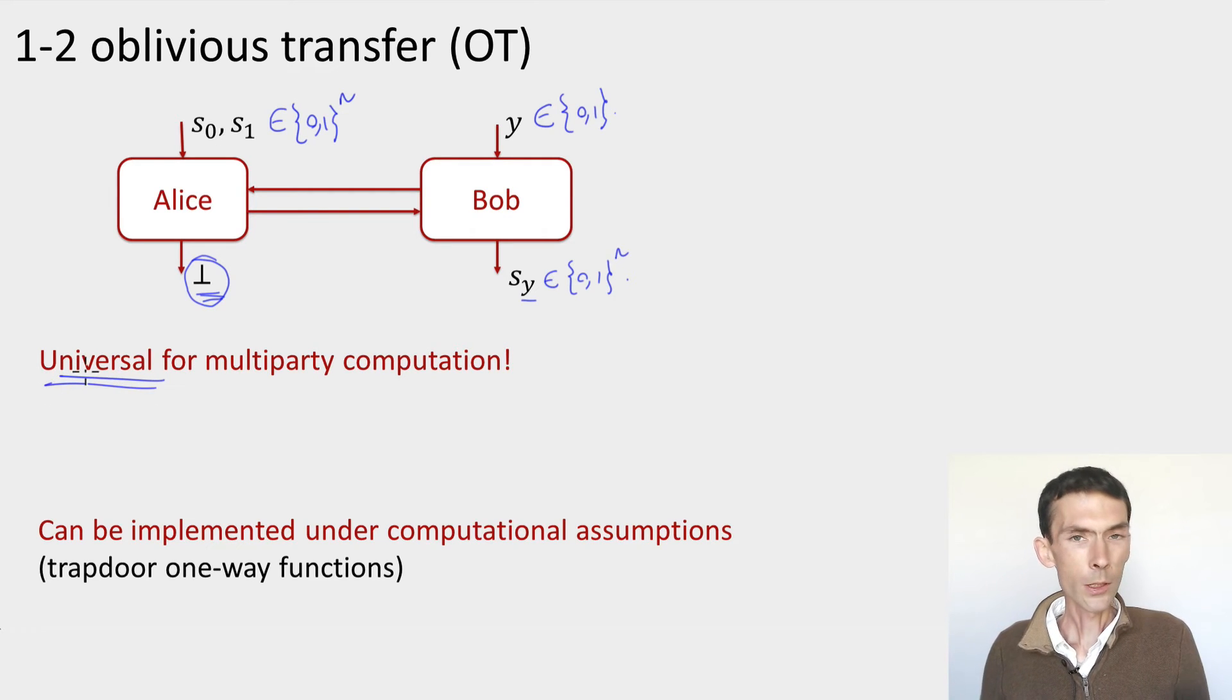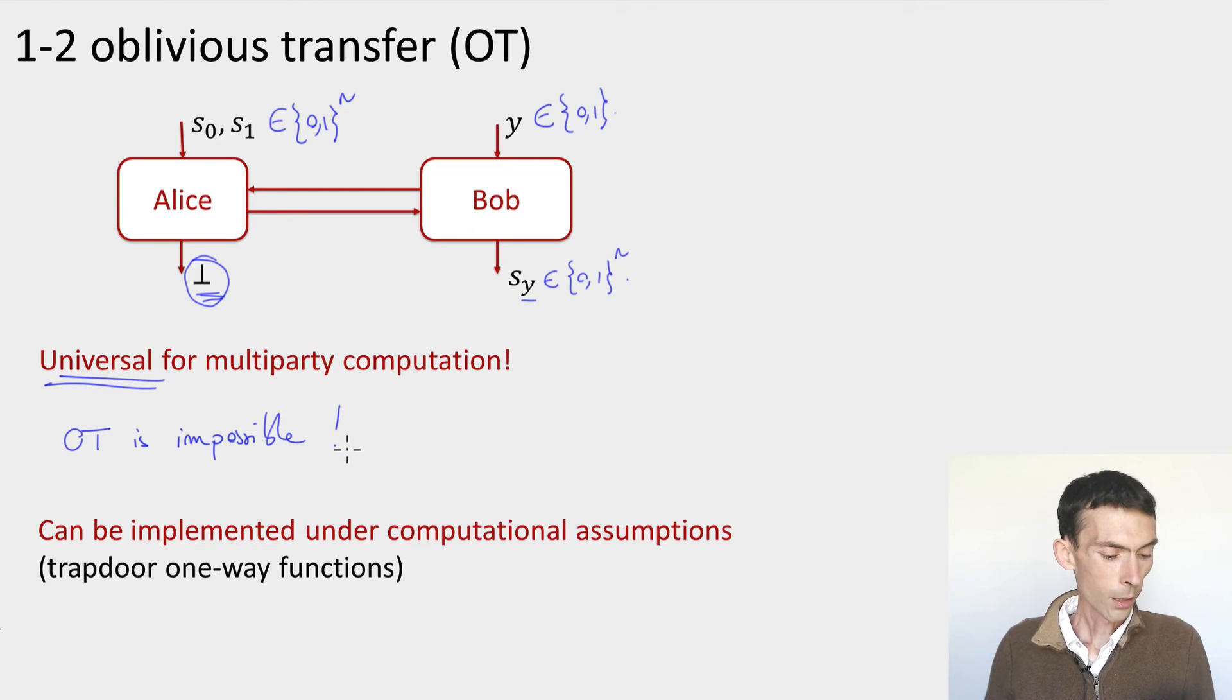Now, why would anyone care about such a primitive? Because it's so-called universal. And we're going to see this very soon. If you can implement oblivious transfer, then you can implement any function in two-party computation. For example, the AND function you can do. Unfortunately, OT is impossible to achieve perfectly using either classical communication or quantum communication. So we don't have it. I'm not going to show you the proof of impossibility, but we'll see a very similar proof for a different primitive called bit commitment in a subsequent video. Now, oblivious transfer is impossible to implement with unconditional security or so-called statistical security. You can implement, though, under computational assumptions. So, for instance, the existence of one-way functions. And in that case, you can derive the whole of multiparty computation just from your implementation of oblivious transfer. That's why it's still a very studied primitive.